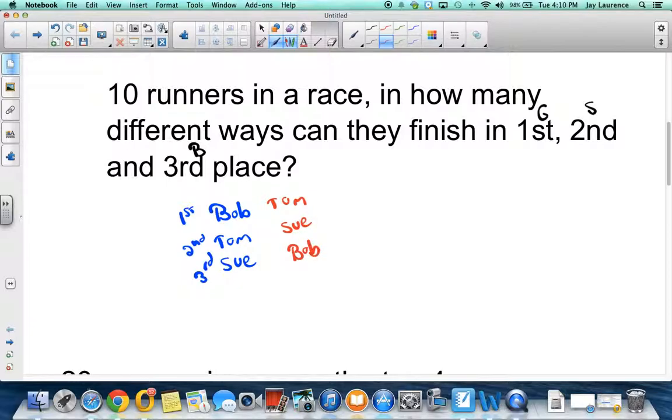But if I change the order and get Tom, Sue, then Bob, is that the same thing? No, of course it's not the same thing. So you see, the order does matter. In this case, the blue case, Bob's getting the gold medal. In this case, Bob's getting the bronze medal. So this is a permutation. And we're going to come back and see how to solve these in a minute.